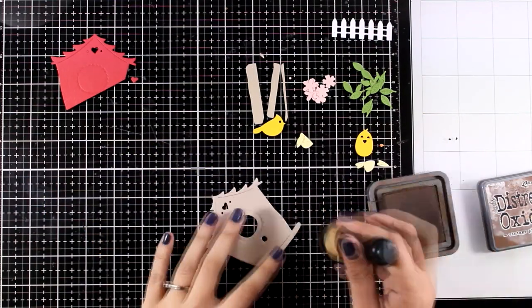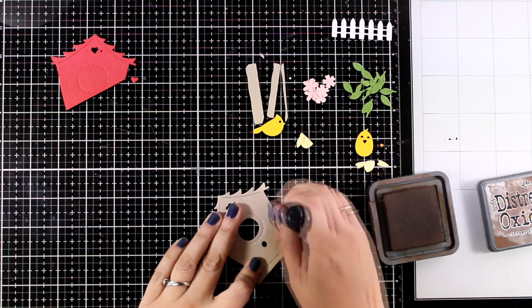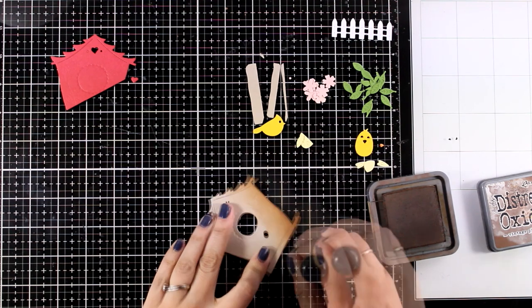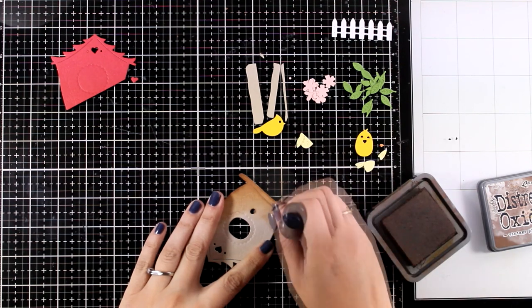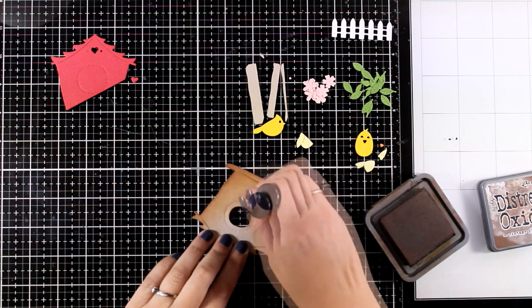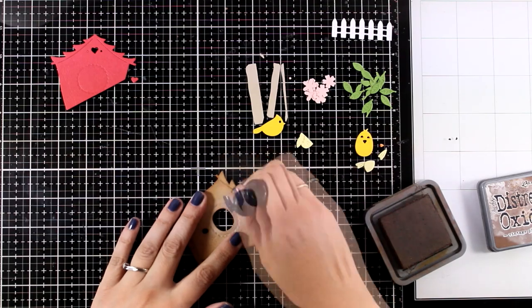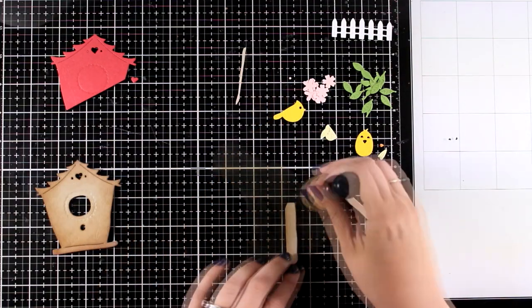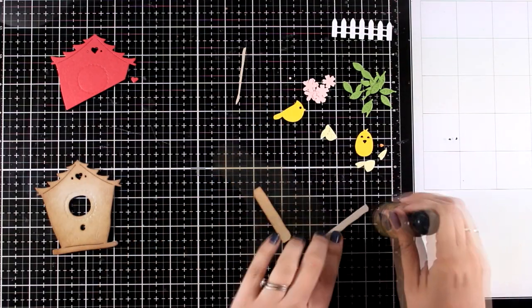The bird house die not only cuts out the design but it also embosses, and the easiest way to bring out that embossed detail is to ink up your cutout. Here I'm just using distress oxide ink and I'm going with a vintage photo. And I'm going to repeat the same process for the wooden plugs.